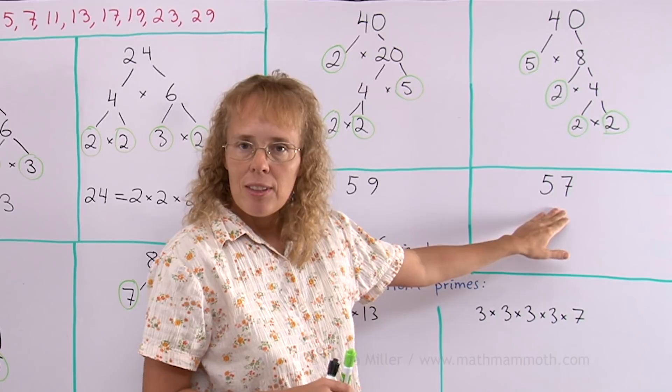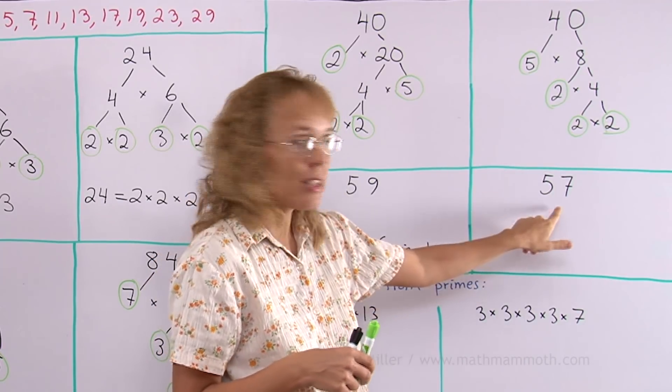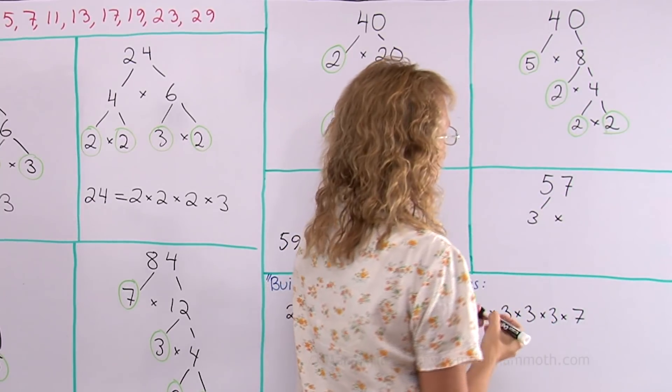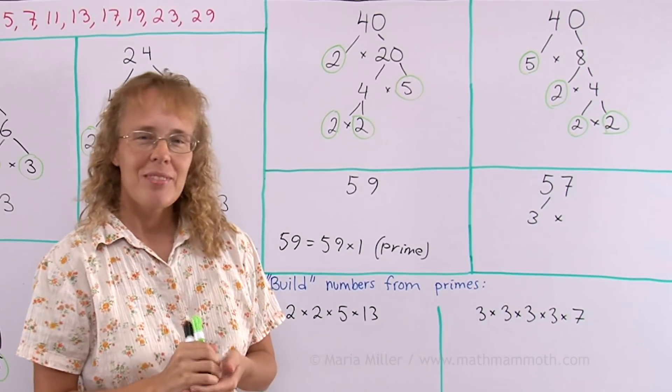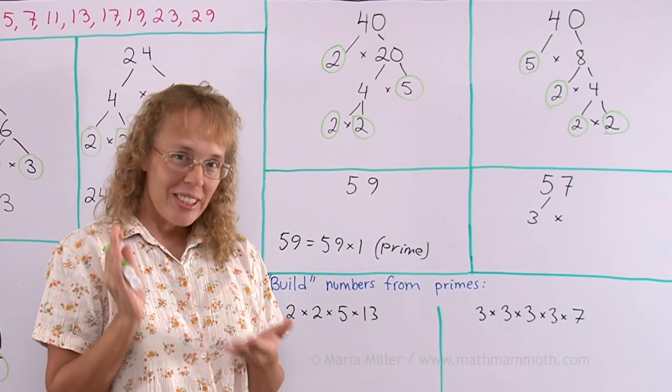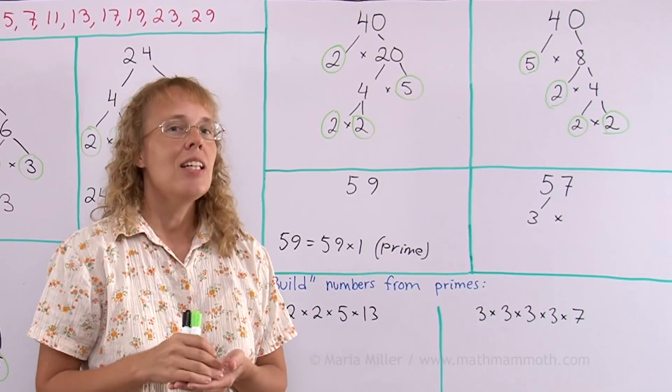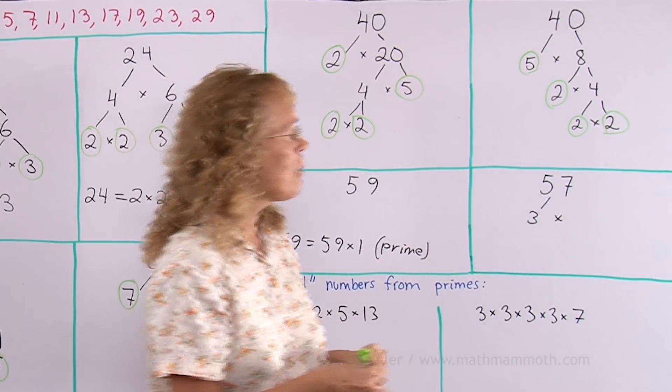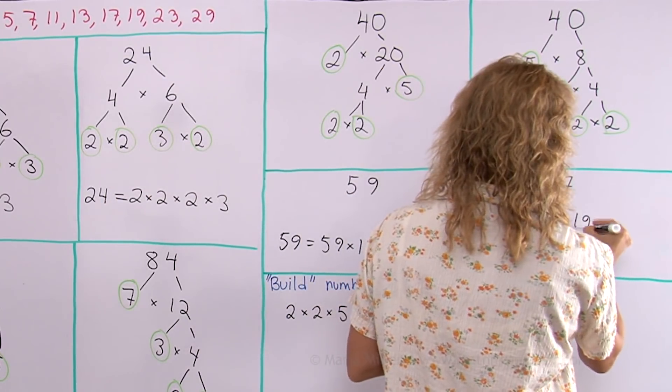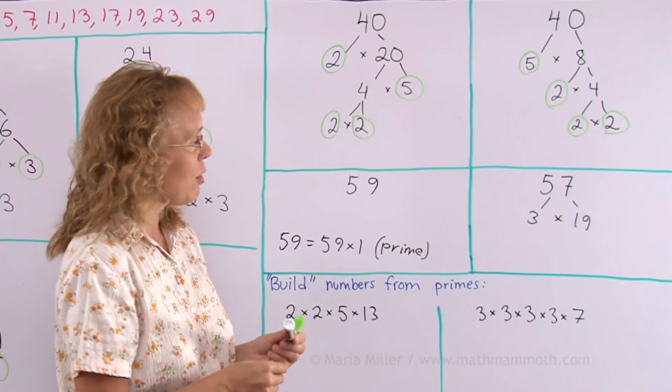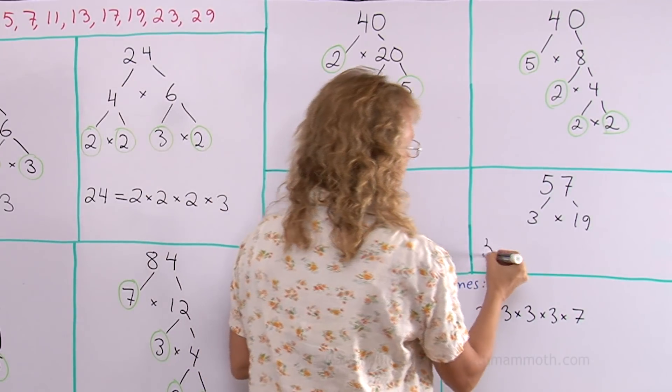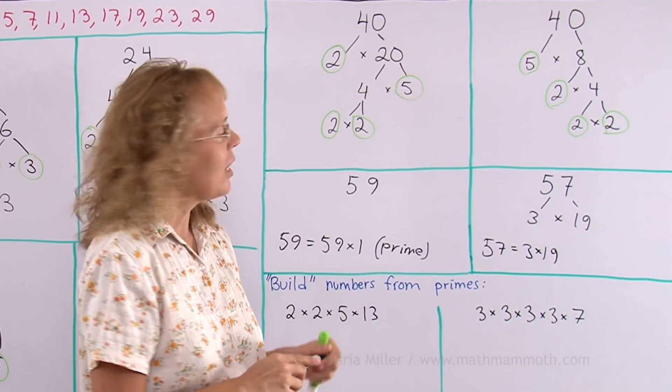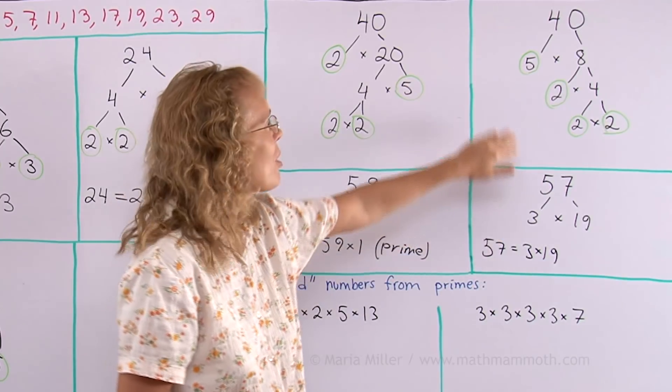57 though. 5 plus 7 equals 12. 12 is divisible by 3, so this is divisible by 3. I can therefore start it by 3 times something. What's that something? You know 60 is divisible by 3. 60 is 20 times 3, and this is just one 3 less than that. So it's 3 times 19. Now, 19 is a prime, so I have my leaves: 3 and 19. 57 is 3 times 19. So sometimes your factor tree is pretty short and sometimes it is longer.